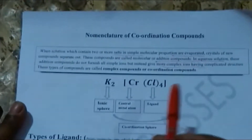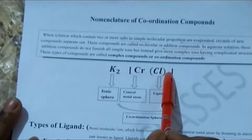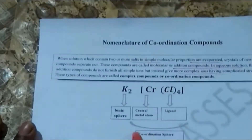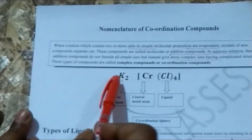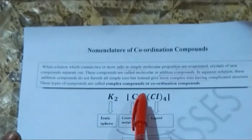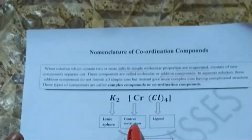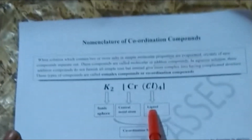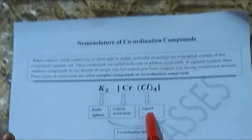If you see the bracket, the whole thing is known as the coordination sphere, and the potassium part is the ionic sphere. This is chromium — the central metal atom — and chlorine is the ligand. So this is a new term; now we'll try to find out what a ligand is.